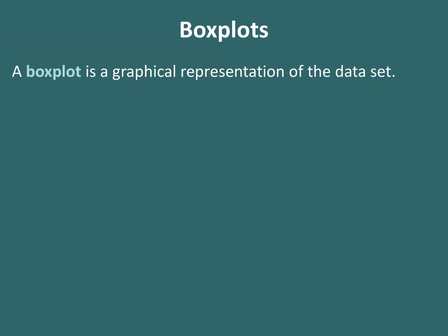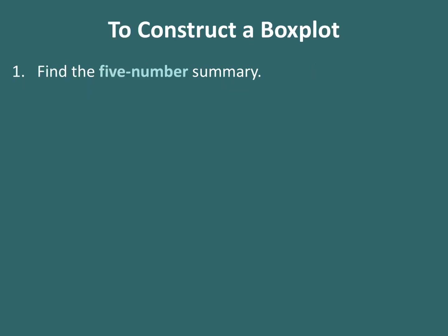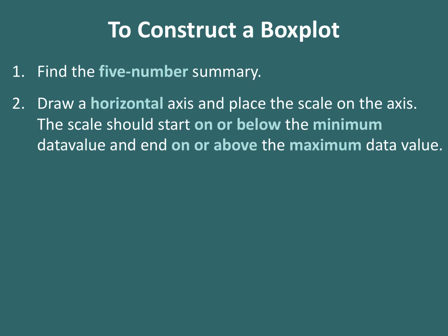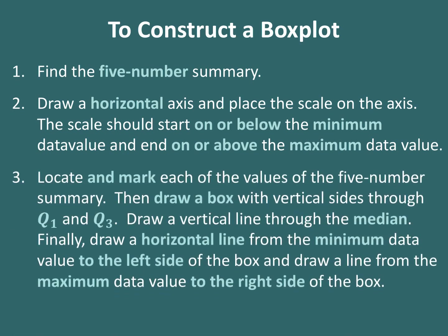A box plot is a graphical representation of the data set. To construct a box plot: first, find the five-number summary. Then draw a horizontal axis with a scale starting on or below the minimum data value and ending on or above the maximum. Locate and mark each value of the five-number summary. Draw a box with vertical sides through Q1 and Q3. Draw a vertical line through the median. Finally, draw a horizontal line from the minimum data value to the left side of the box, and a line from the maximum data value to the right side of the box.